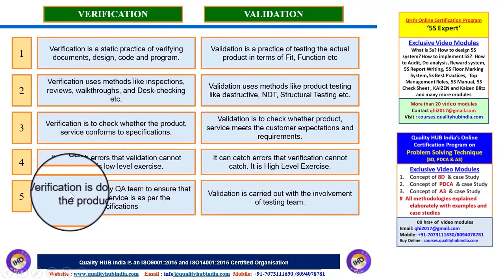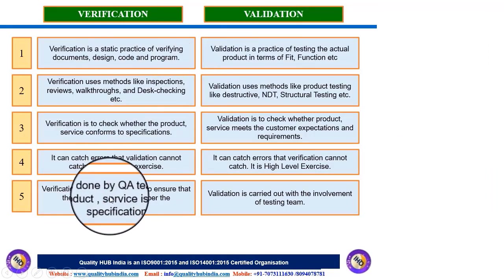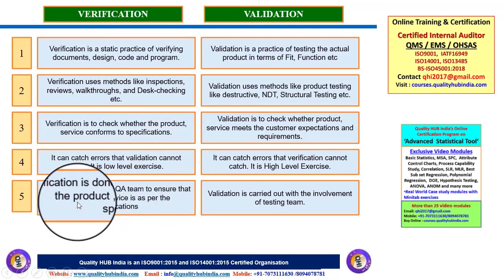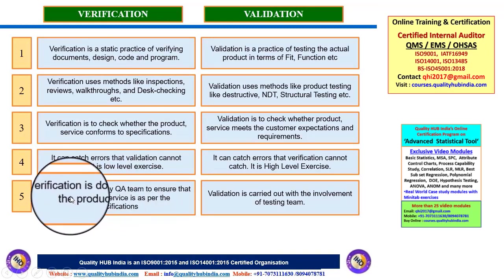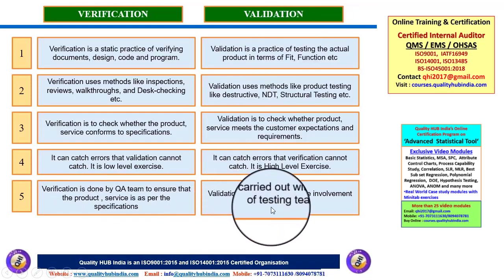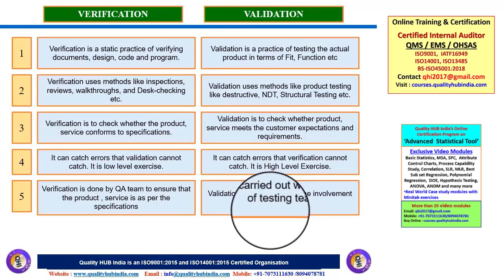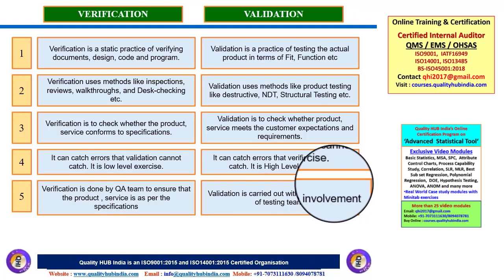The fifth difference concerns responsibilities. The quality assurance team is broadly responsible for verification of products and services against specification. For validation, it generally goes through the testing team. In certain cases it may still be the quality assurance team, but there are separate functions or labs and testing departments exclusively responsible for validation activities, depending on the maturity and size of the organization.